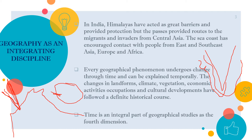India's physical features are linked to geographical phenomena which change over time — landforms change, climate changes, vegetation changes, geography changes dynamically, society changes, and the economy changes. Zoology, oceanography, and meteorology are all part of this. Time is an integral part — the fourth dimension of geography. It is an integrating discipline.